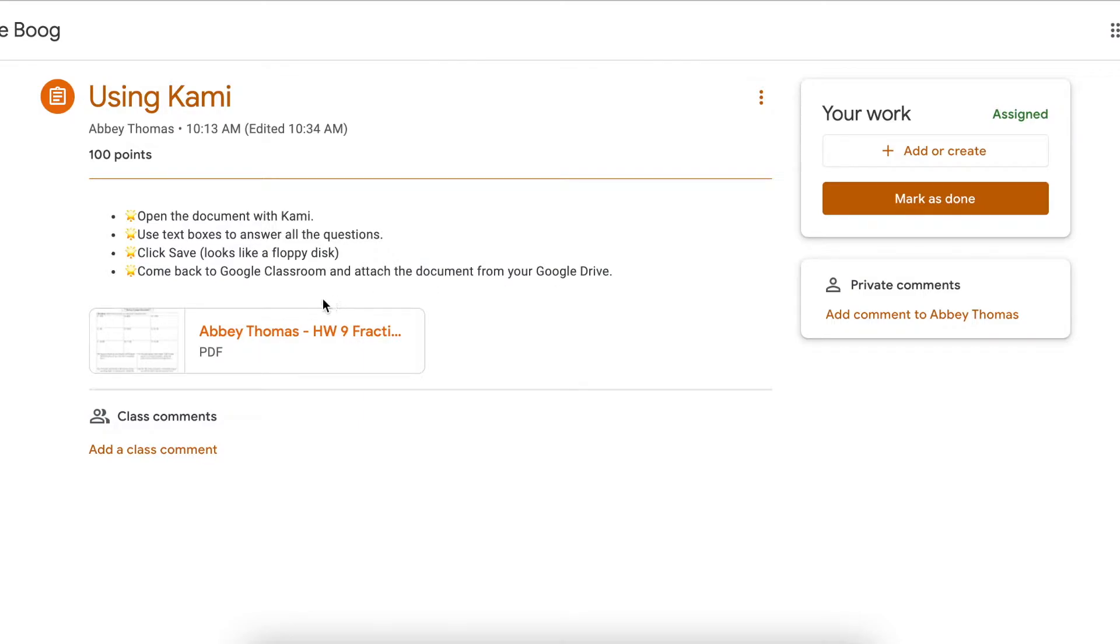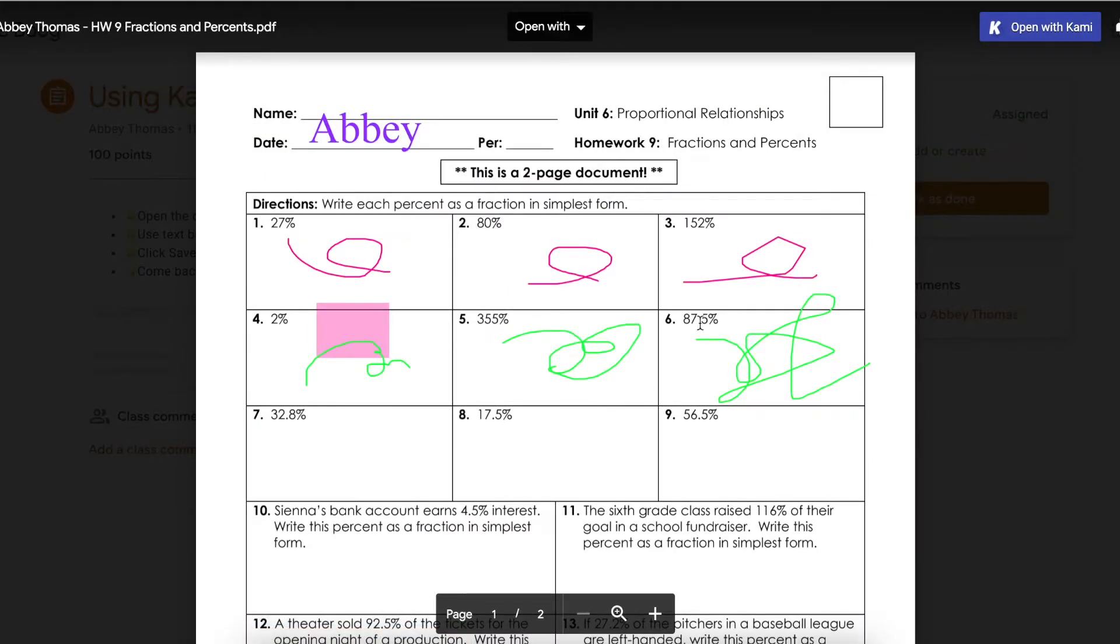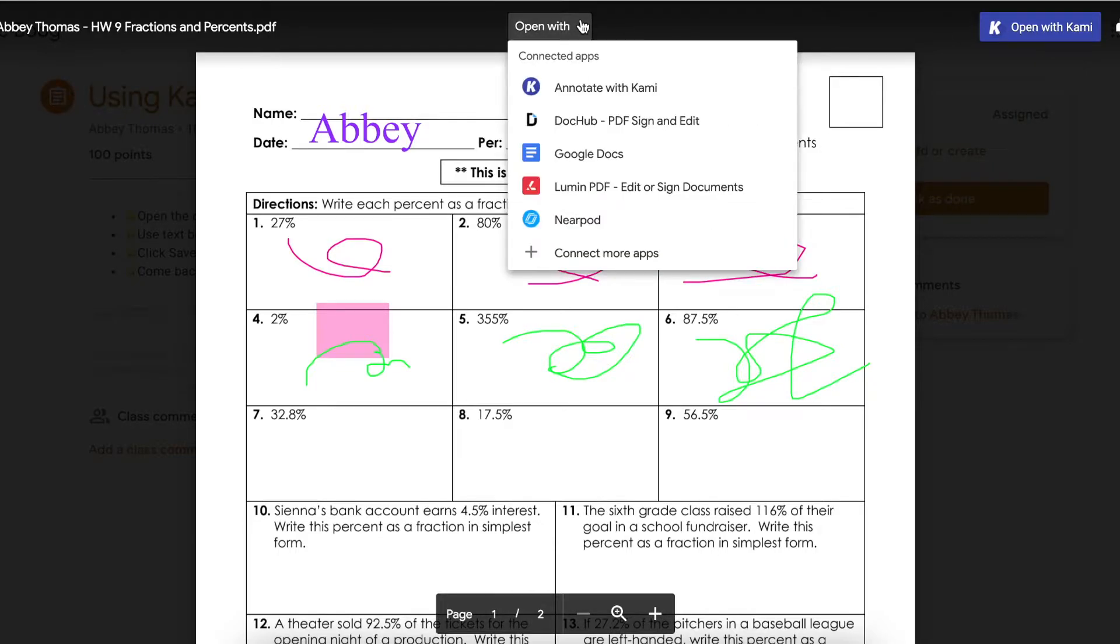Here's how we do that. We're going to click on the attachment and you can see that I've already drawn on this one. We're going to click either the open with Kami button or the open with and then annotate with Kami button.